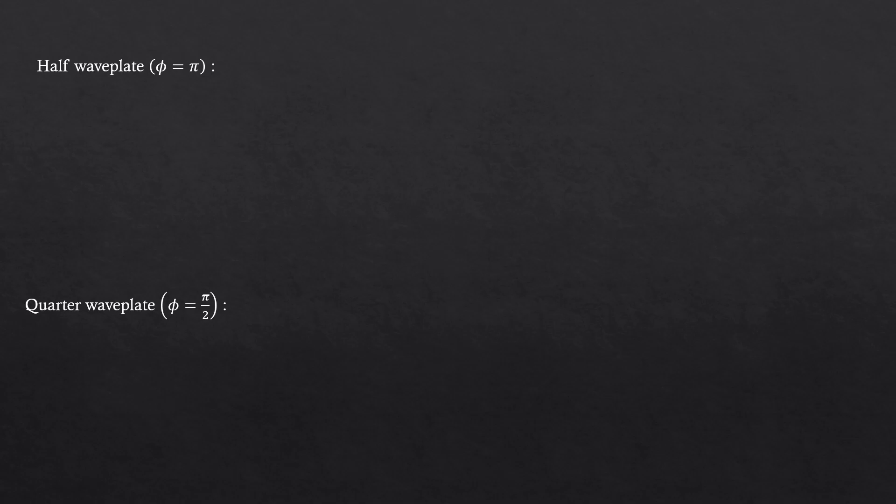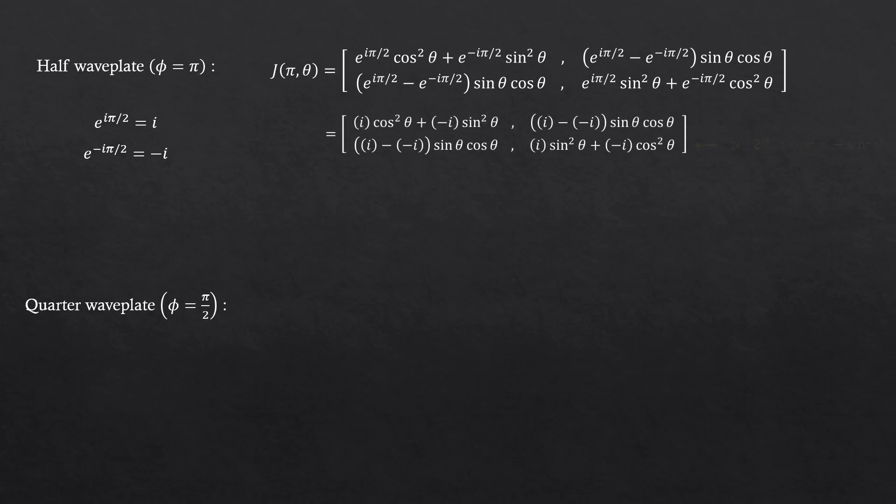Let's first try to plug in the angle π into the Jones matrix. e^(iπ/2) is equal to the imaginary number i, and e^(-iπ/2) is negative i. You know that, right? So if we simplify the expression and also apply some of the trig identities, we'll get this expression, which is the matrix for the half waveplate. You can pause the video and take your time to follow this.